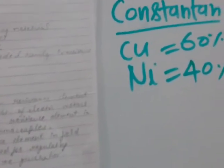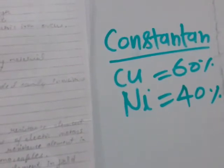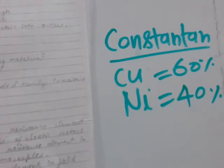The next material is constantan. Constantan is an alloy of copper and nickel — 60% copper and 40% nickel. This composition will be asked in the exam, along with its applications and properties.